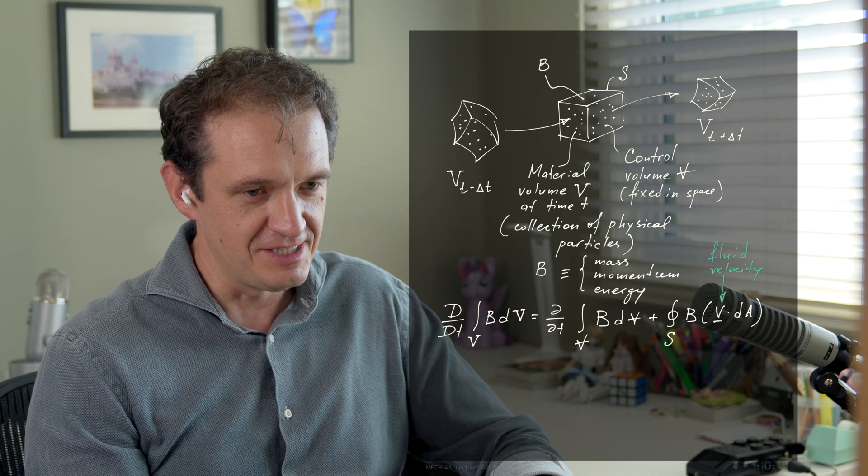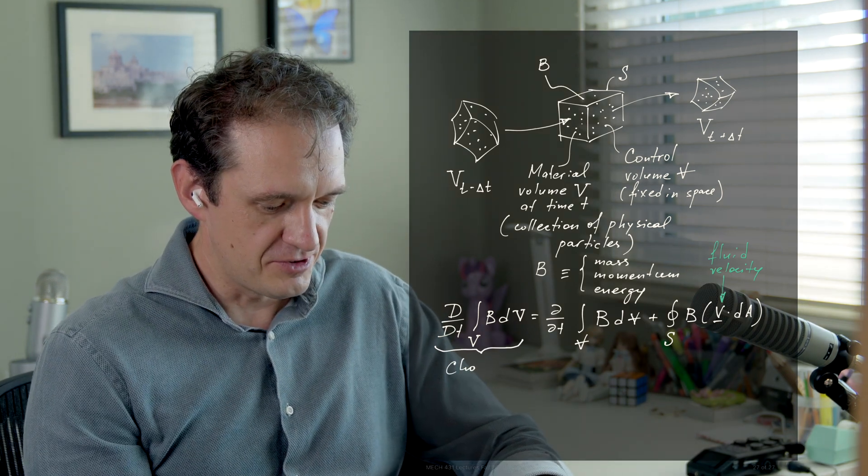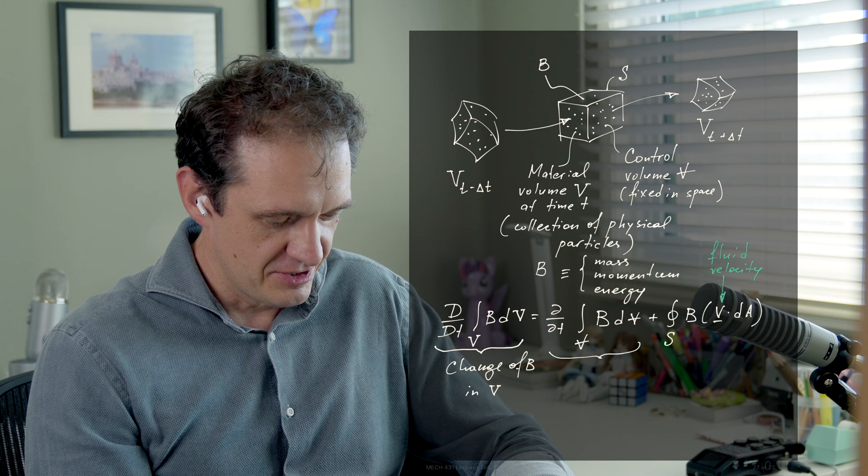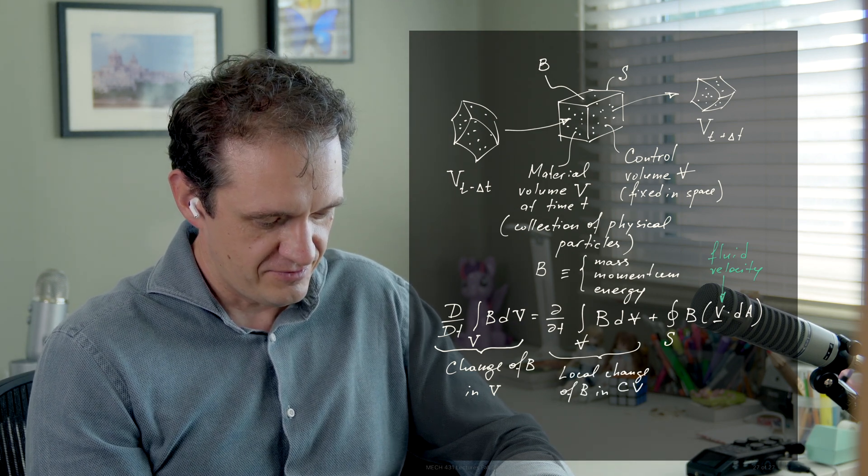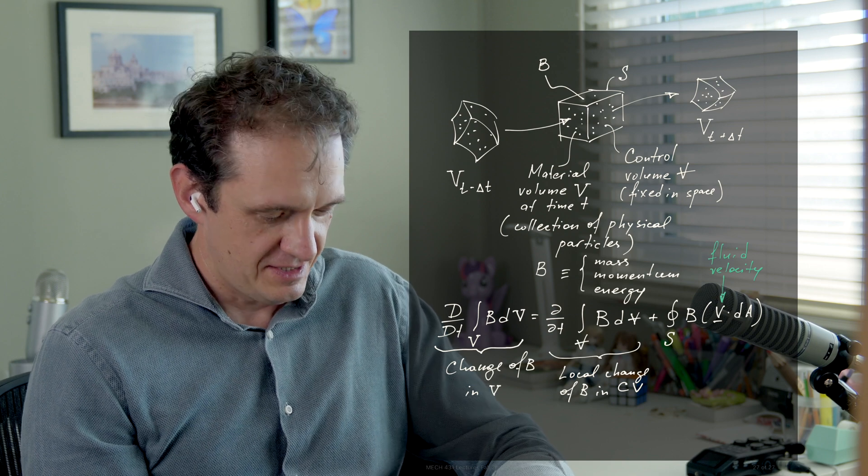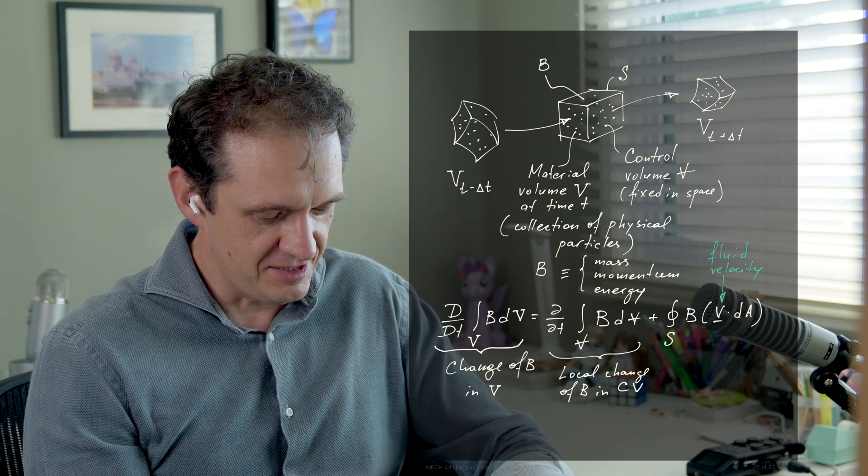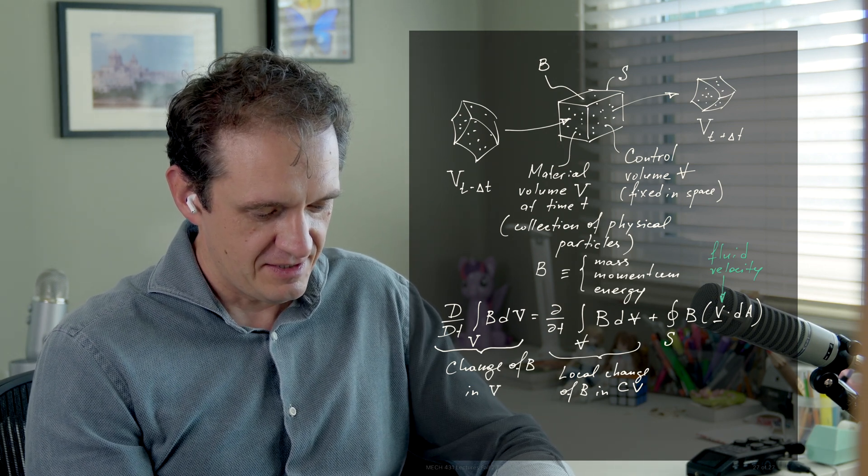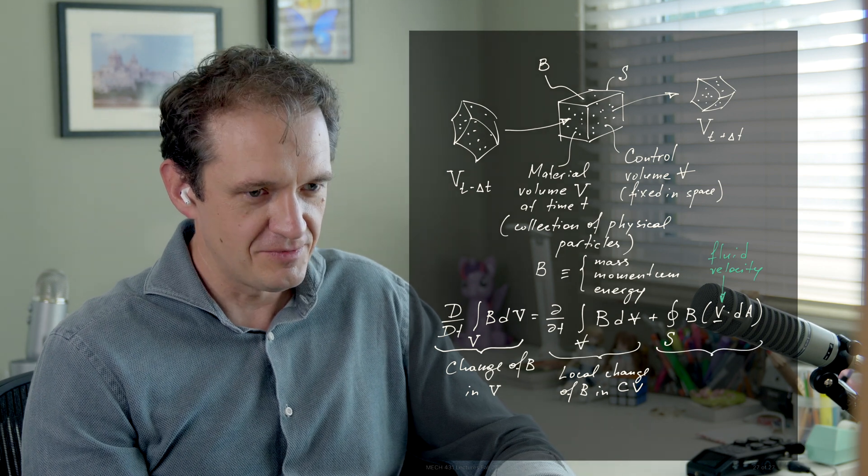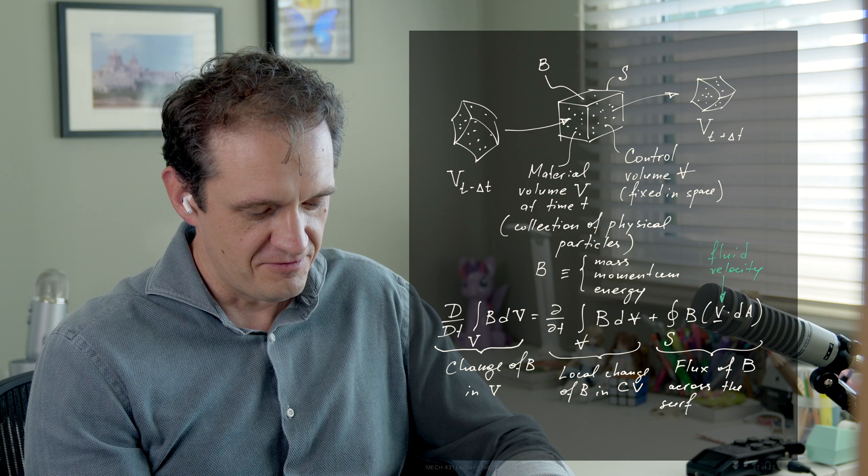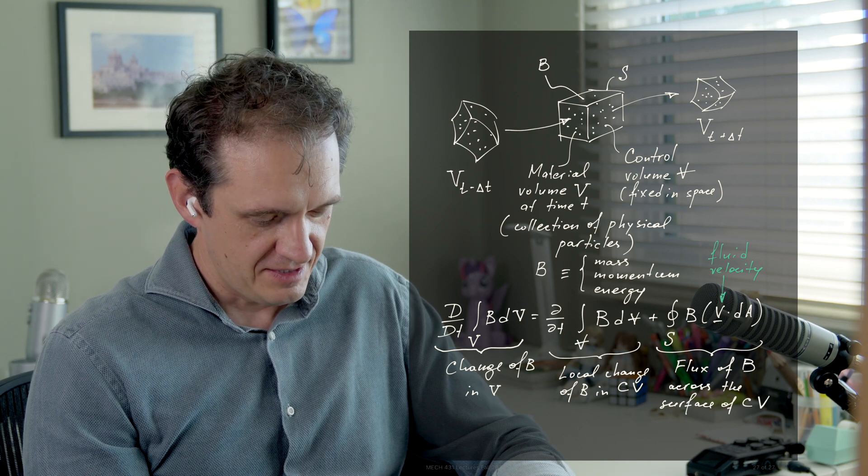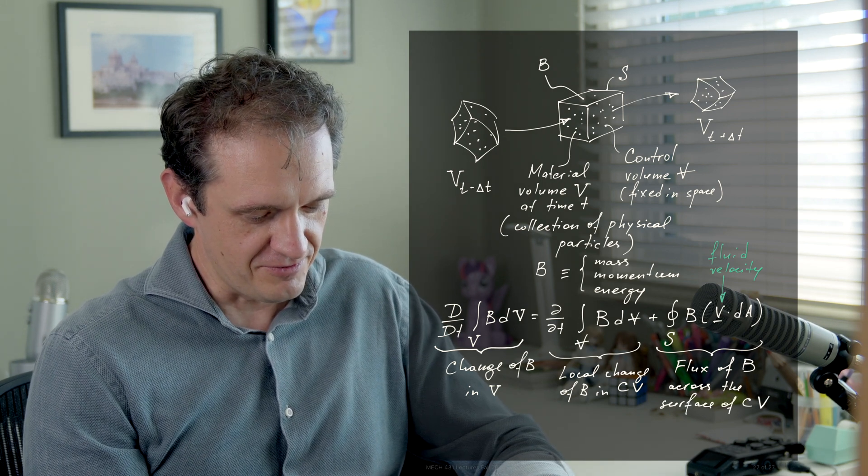the flow velocity. So the first term on the right is the change of this property B in the control volume itself, and the second term on the right is the flux of B across the surface of the control volume.